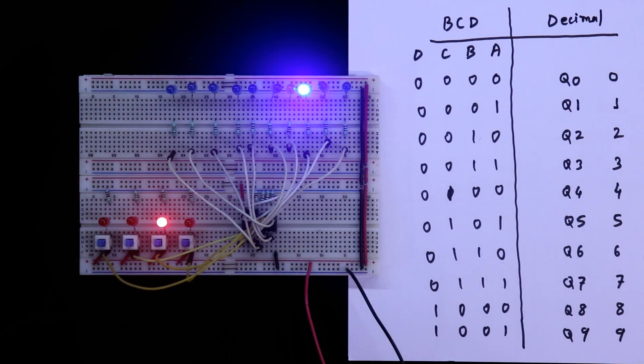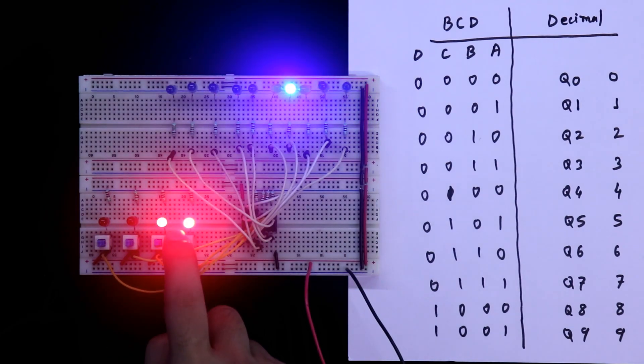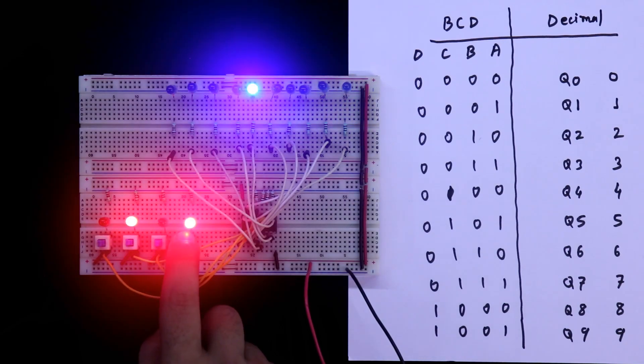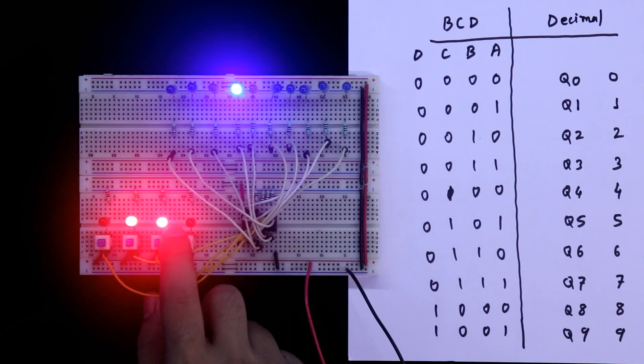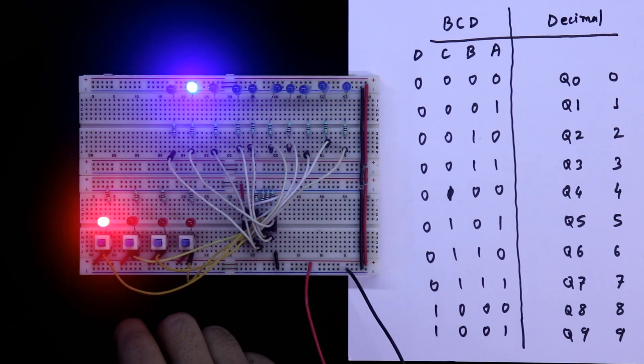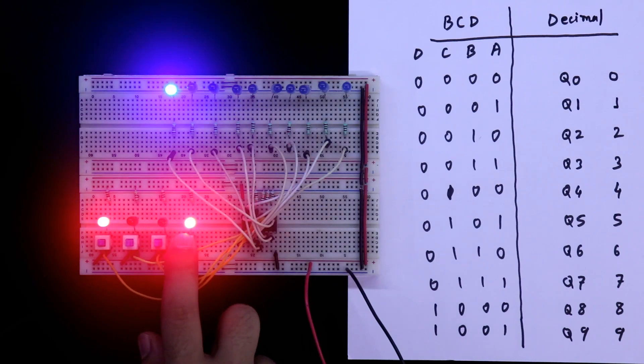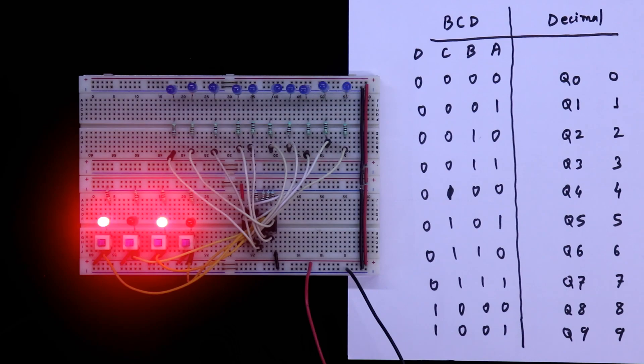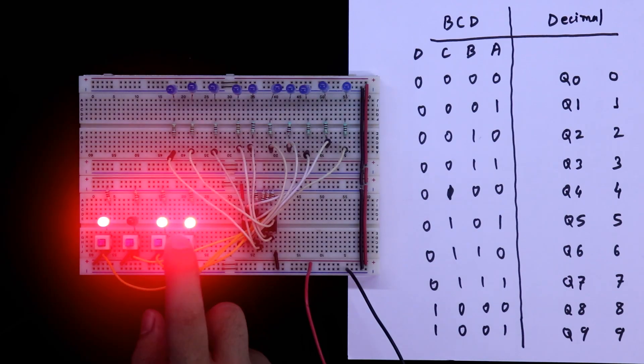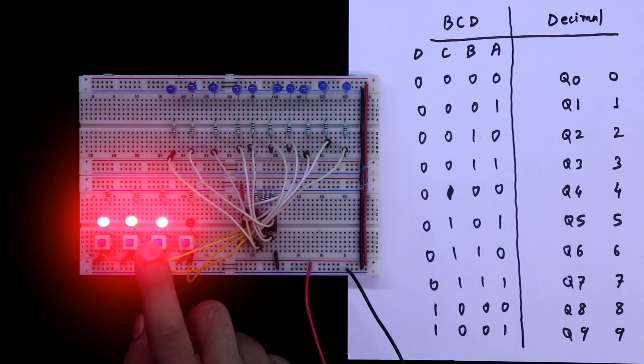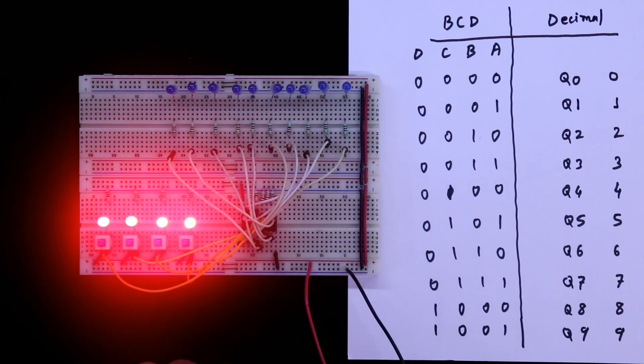This is 2, 3, 4, 5, 6, 7, 8, and the last input 9. The next is 10. See all the outputs are 0. It is 10, 11, 12, 13, 14, and 15. So from 10 to 15, all the outputs are 0.